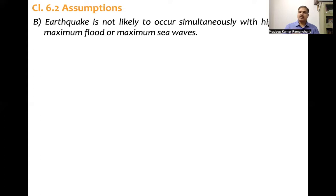That means, strong earthquake ground motion and heavy wind occur together. That's what code is saying. Strong earthquake ground motion and maximum flood or strong earthquake ground motion and maximum sea waves. So there is less likelihood. That is the assumption which code is making. Earthquake is not likely to occur simultaneously.